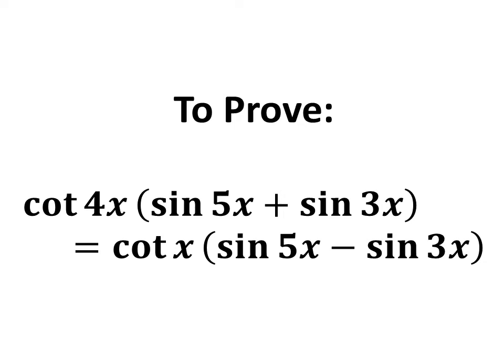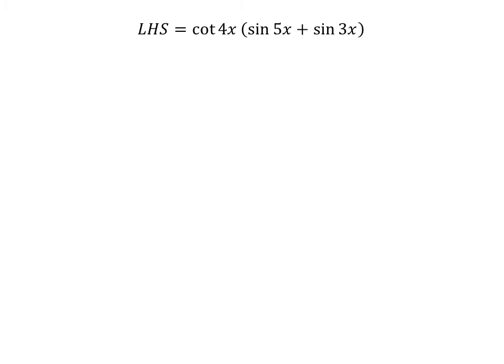In this video, we will learn to prove the equation: cotangent of 4x times the quantity sine of 5x plus sine of 3x equals cotangent of x times the quantity sine of 5x minus sine of 3x. The left-hand side of the equation to be proved is cotangent of 4x times the quantity sine of 5x plus sine of 3x.